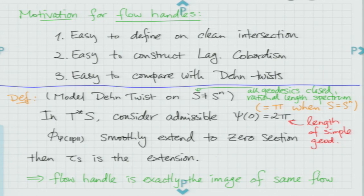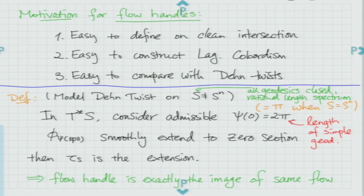Some words about why we really want to do these handles: it's easy to define for clean intersections, because we don't need to patch local models every time. It's easy to construct a Lagrangian cobordism, and it's very easy to compare with the Dehn twist, because if you are familiar with the definition of the Dehn twist, you can see that they match directly. Let me recall the definition of the Dehn twist.